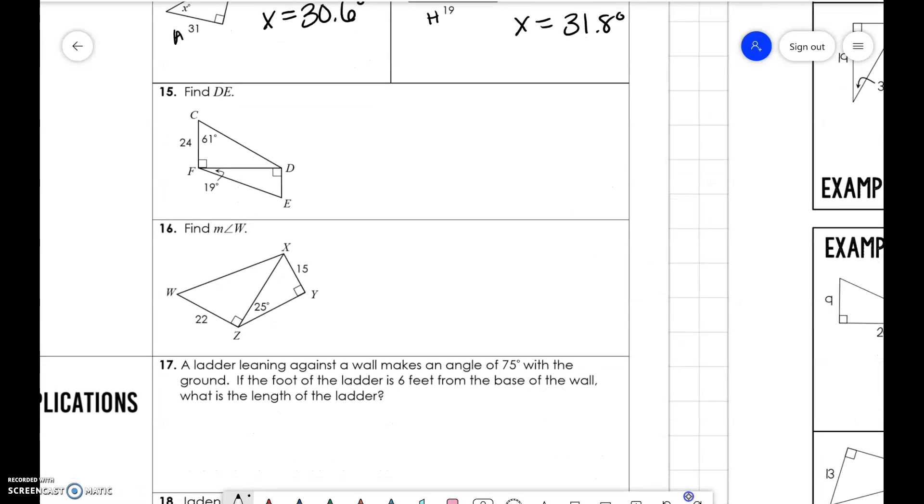Now we get to a little bit of more challenging problems because we kind of have to use one triangle, solve it, and then find the next. So if we are trying to find DE here, we're trying to find this missing side length. We need to use this top triangle to find what this side is first because then we need to use that for the bottom one. Because obviously the only thing that they share is FD. So if we are doing this as opposite and adjacent, tangent of 61 is equal to x over 24. X is equal to 43.3.